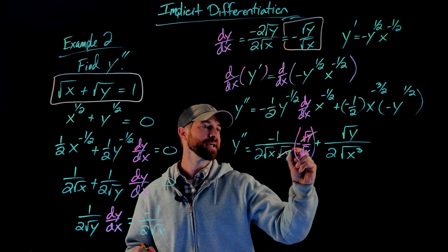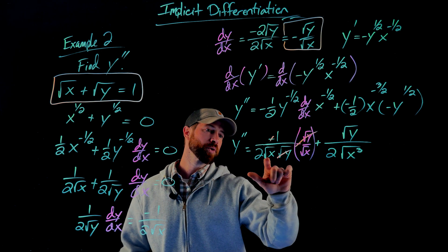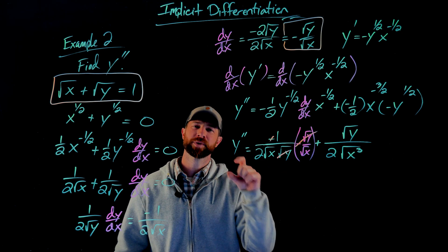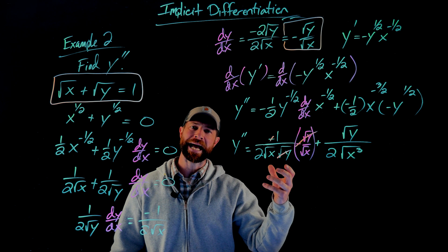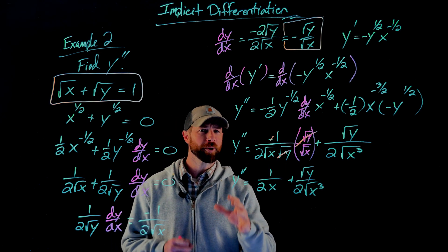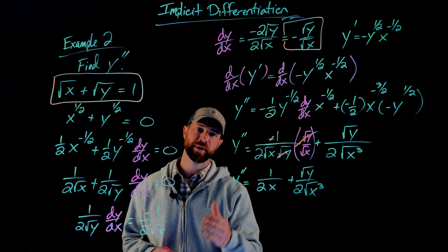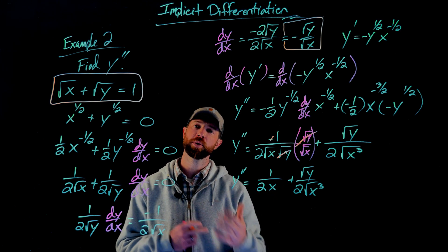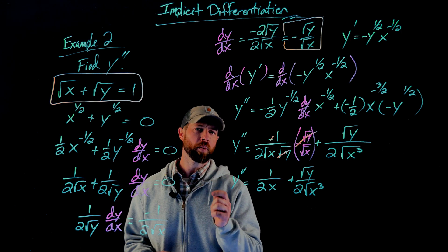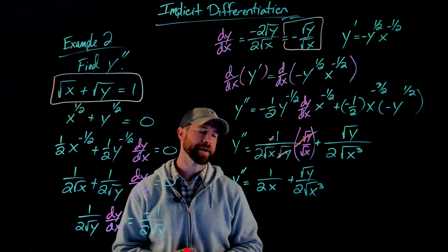Now I'll do some canceling. The y's cancel, the negatives cancel each other out, and then we get √x times √x — which is simply x — in the denominator. Let me rewrite this. At this point we have a really simplified version of the second derivative. We no longer have the first derivative in this expression, but I want to go one more step to show how we can make this even better.